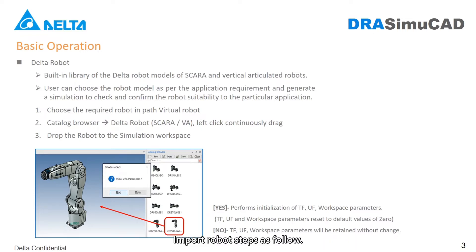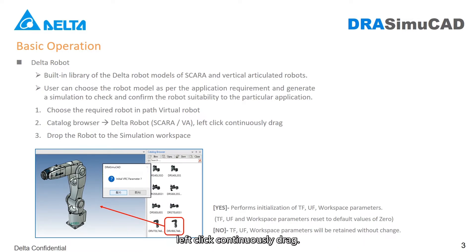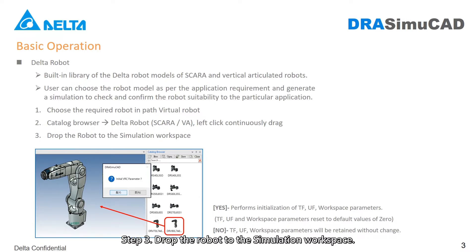Import robot steps are as follows. Step 1: Choose the required robot in PATH Virtual Robot. Step 2: Open catalog browser and then select robot model, left click and continuously drag. Step 3: Drop the robot to the simulation workspace.